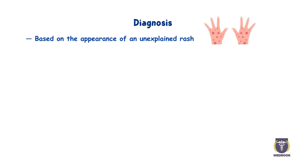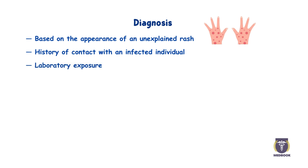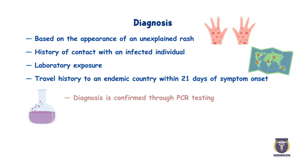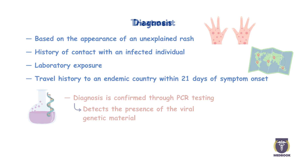The diagnosis of monkeypox is suspected based on the appearance of an unexplained rash illness, a history of contact with an infected individual or laboratory exposure, or travel history to an endemic country within 21 days of symptom onset. Diagnosis is confirmed through PCR testing, which detects the presence of the viral genetic material.